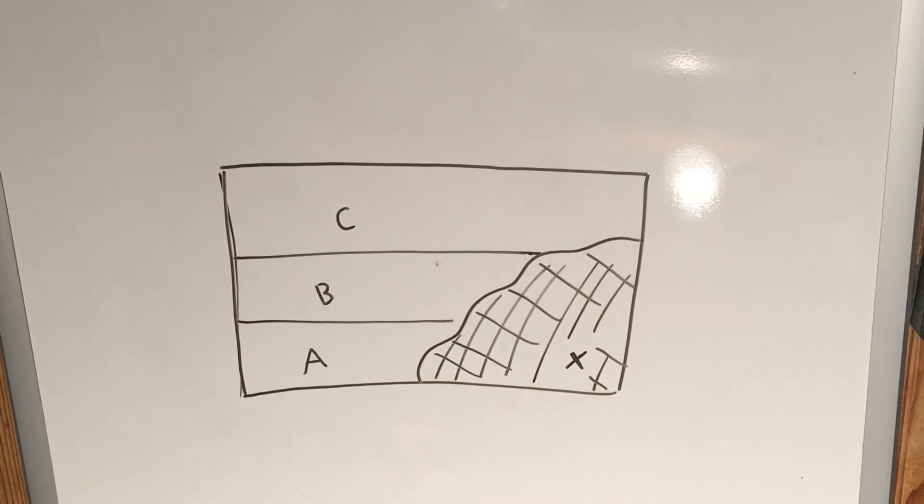We would be correct in saying all those things, but there's also one final piece that you should mention when you've got an igneous, in this case this is most likely a batholith, intruding upon these three sedimentary layers.